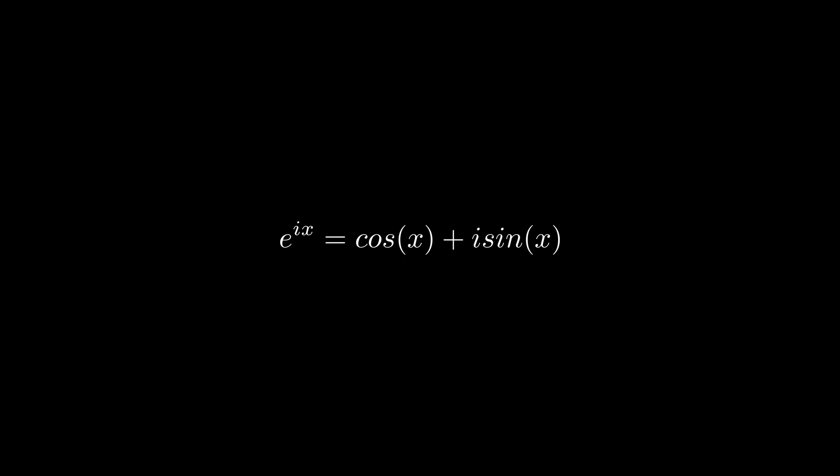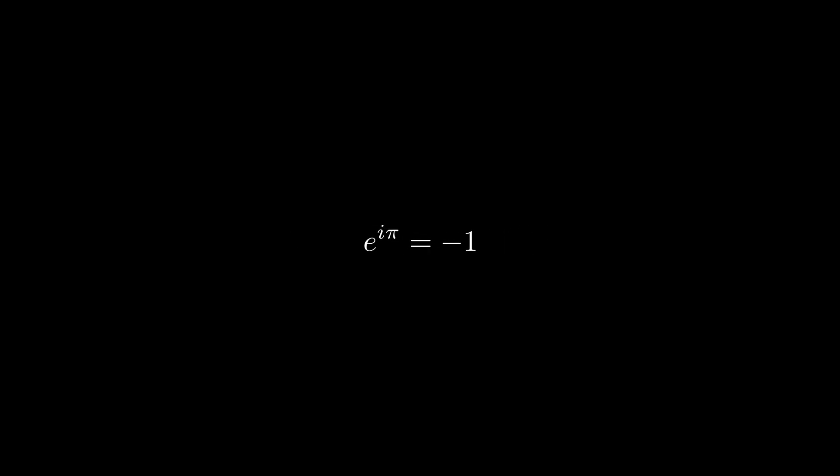This leaves the famous formula: e to the power of ix equals cosine of x plus i times sine of x. From this, we can plug in pi for x to get the famous identity. Cosine of pi goes to negative 1 and the complex component goes to 0, leaving e to the power of i pi equals negative 1.